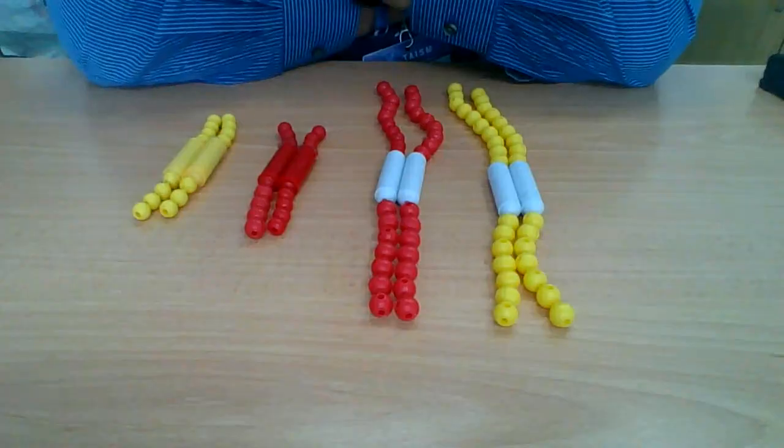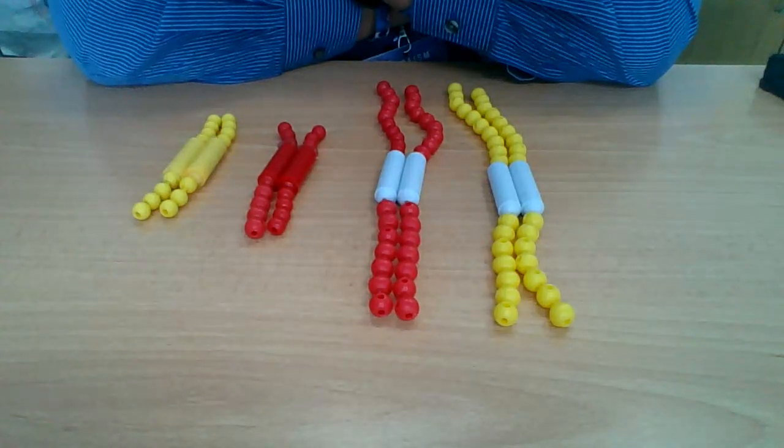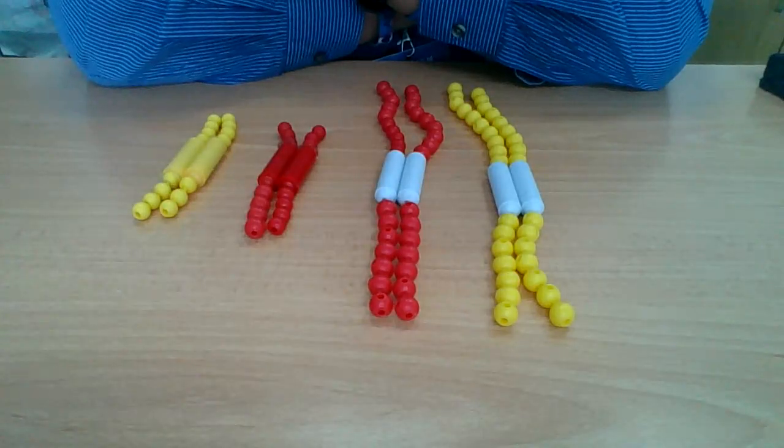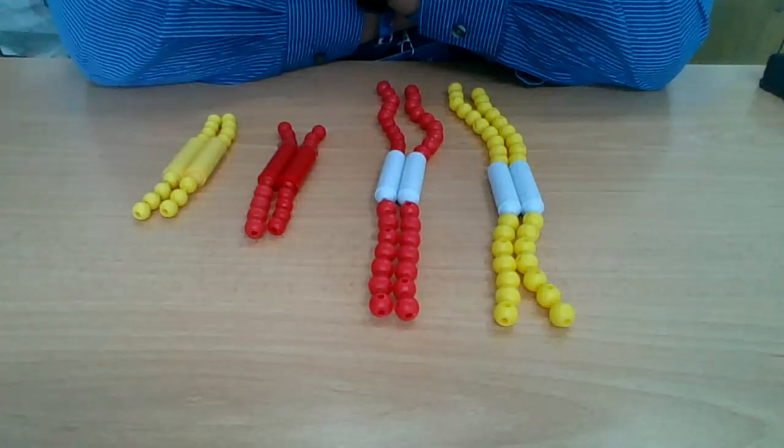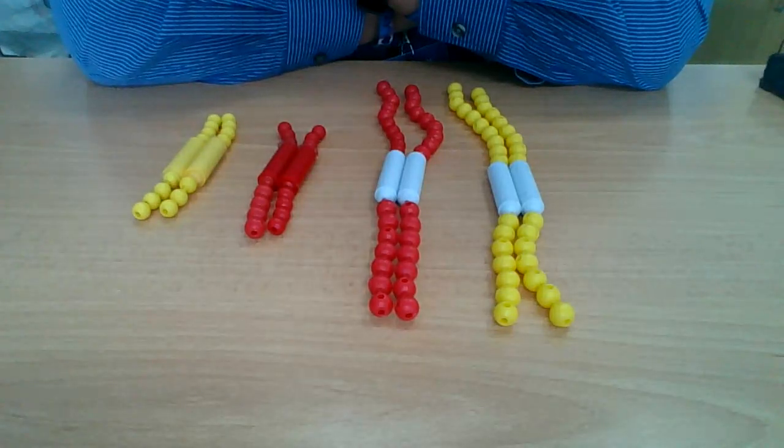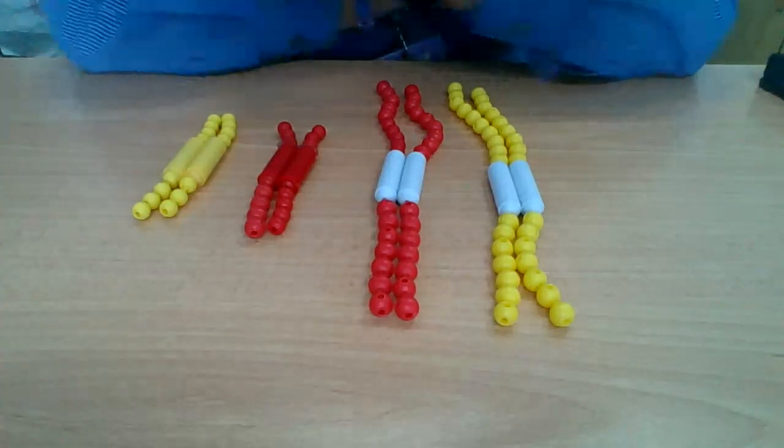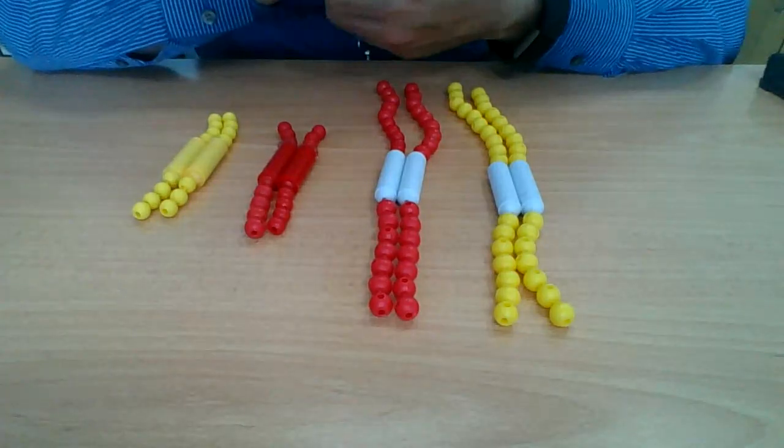During prophase 1, remember during meiosis it's going to divide twice. That's why we get that Roman numeral after the phases. Meiosis evolved from mitosis, so it's very similar in structure and function but it's going to give us different results. During prophase 1 the chromosomes condense. This is in germline cells.